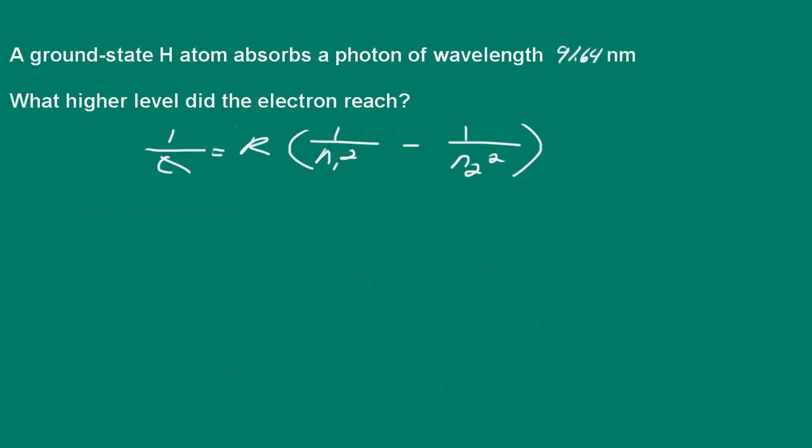Here we're told that a ground state hydrogen atom absorbs a photon of a wavelength of 91.64 nanometers. What higher level did the electron reach?